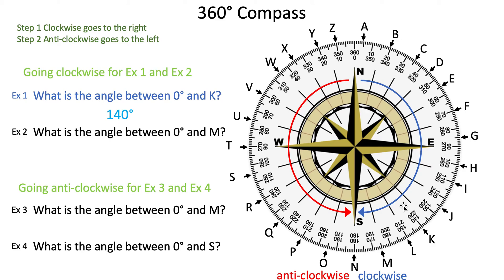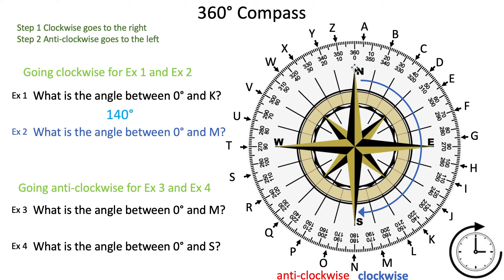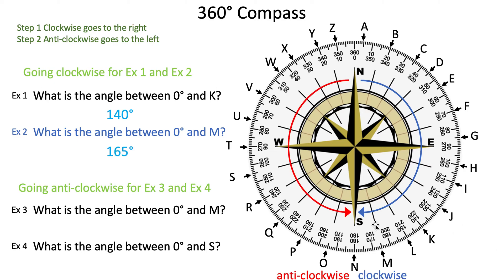Next example: what is the angle between zero degrees and M, going clockwise? Count up: 0, 10, 20, 30, 40, and so forth, through 90, 100, 110, reaching 150 and 160 degrees where we find M. Using the outer numbers, M is halfway between 160 and 170, which gives us 165 degrees.